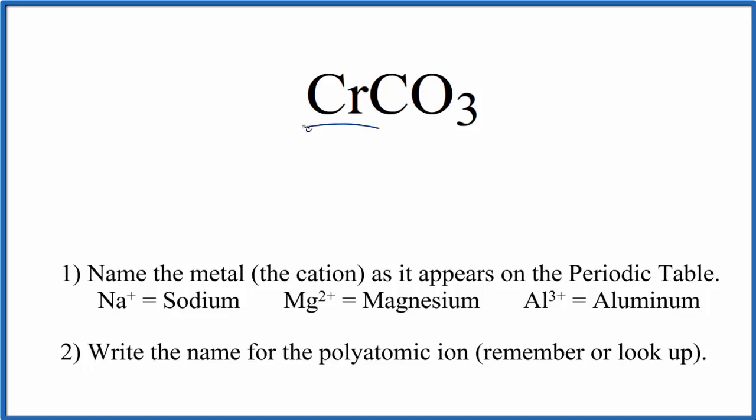So first we write the name of the metal as it appears on the periodic table. That's our chromium here. And then we're going to write the name for the polyatomic ion. So you either memorize that CO3 is called the carbonate ion, or if you're allowed, you look it up. So far, we have chromium carbonate as the name for CrCO3.